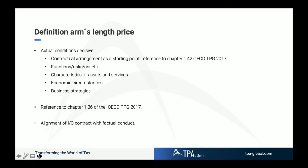The legal basis for the arm's length price is mainly based on the OECD transfer pricing guidelines 2017. The actual conditions are relevant, so the contractual arrangement is a starting point for further analysis. Next to that, the functions performed, risks absorbed, and assets used are relevant. The characteristics of the assets and services provided are another element to be considered, as are the economic circumstances and the business strategies behind them.